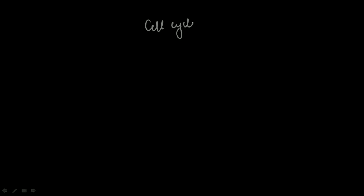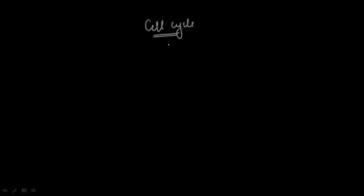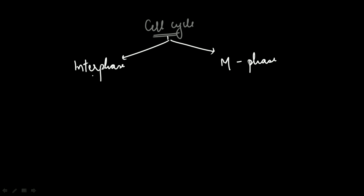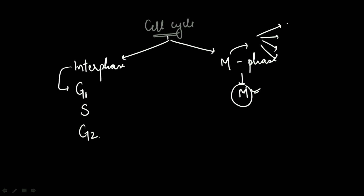We have already dealt with the various phases of the cell cycle in detail in previous videos. Let's quickly revise. The cell cycle is mainly divided into interphase and M phase, also called the mitotic or division phase. In interphase there are three sub-phases: G1, S, and G2. In M phase there are four main sub-phases: prophase, metaphase, anaphase, and telophase.